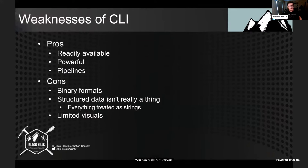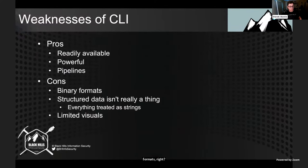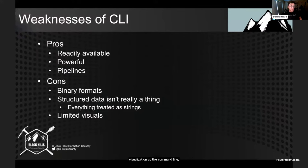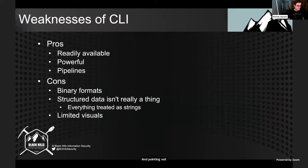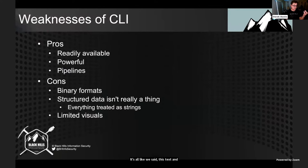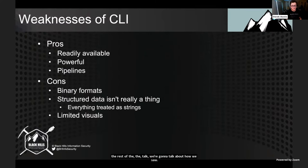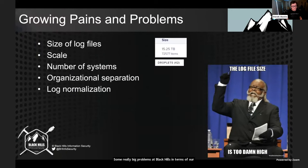The command line is really powerful — you can build out very sophisticated commands — but it has limitations. Probably the biggest one is operating on binary type formats: it has to be text-based, which is okay in most scenarios until it's not. Limited visuals — it's hard to do visualization at the command line, and human beings do well at looking at graphs and spotting patterns. There's no real structured data — it's all just text and strings. And there's another problem: the amount of data coming in. In our SOC at BHIS, we put in network sensors at all our customer sites and end up with about 15 terabytes of Zeek data over a two-week period across 42 sensors. That's tough to do at the command line.